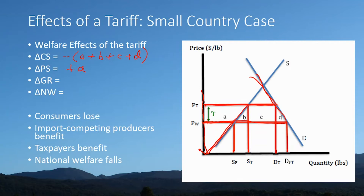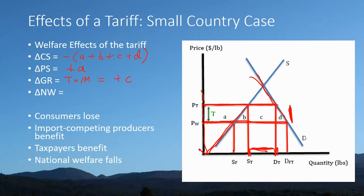What's the change in government revenue? The government is collecting a tax at the border — money going into the government budget. The tariff revenue equals the tariff rate times the amount of imports, which is D sub T minus S sub T. The tariff distance times the import base gives Area C, which corresponds to the tariff revenue collected by the government. We assume they spend it on good government programs, measuring it as a benefit accruing to the economy.